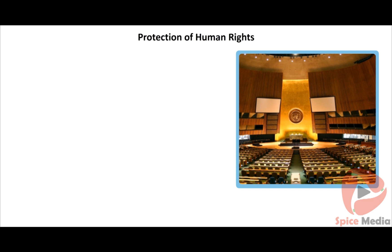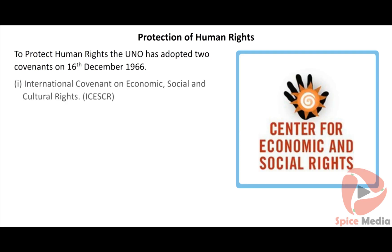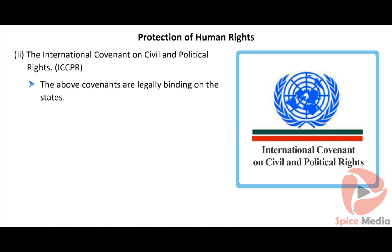The Universal Declaration of Human Rights is to be enforced in all nations. To protect human rights, the UNO adopted two covenants on 16th December 1966: the International Covenant on Economic, Social and Cultural Rights (ICESCR) and the International Covenant on Civil and Political Rights (ICCPR). These covenants are legally binding on states. The Human Rights World Conference was held at Vienna in 1993, adopting the Vienna Declaration and Programme of Action.